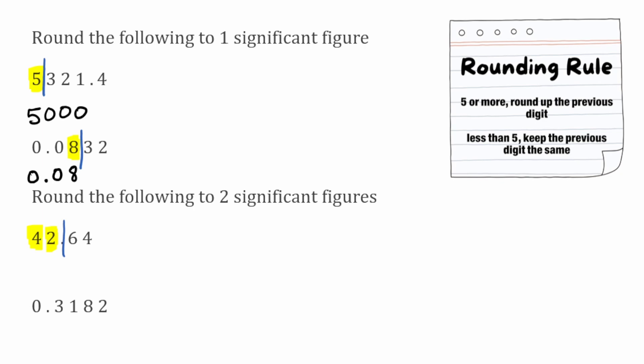We follow our rounding rule again to see whether the two on the left-hand side of the line remains as two or rounds up to a three. We look on the right-hand side of that line and we've got a six, so because it's five or more we're going to round up the previous digit — the two will actually round up to a three. We copy our number down: on the left-hand side we had our four, and then the two rounded up to a three. We could fill in placeholder zeros after the decimal point, but we can just say it's 43. So 42.64 rounded to two significant figures would be 43.